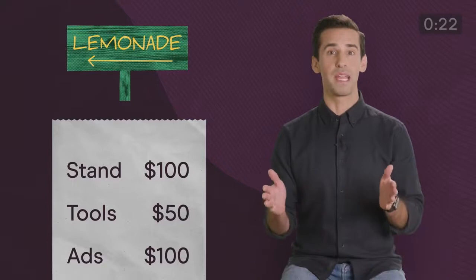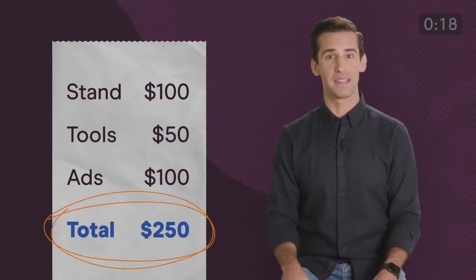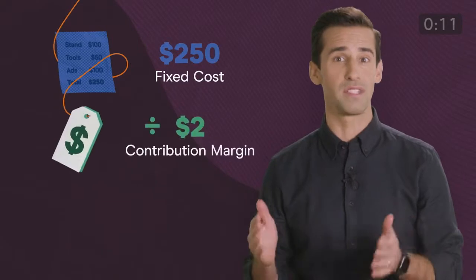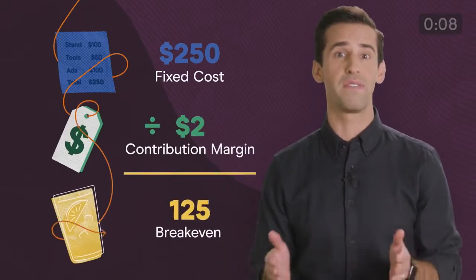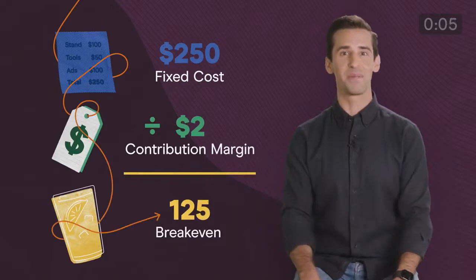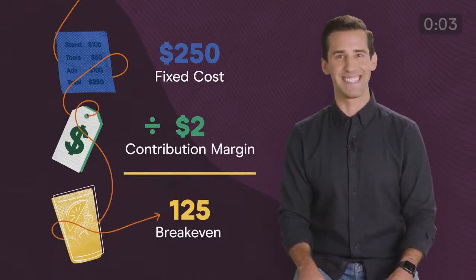In order to make a profit, you need to pay for all of that, which is why we calculate the break even. So how many cups do you need to sell in order to break even on your business? $250 in fixed costs divided by $2 per cup in contribution margin equals 125 cups to break even. And that is contribution margin and break even analysis in 60 seconds.